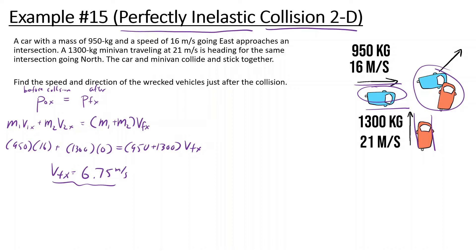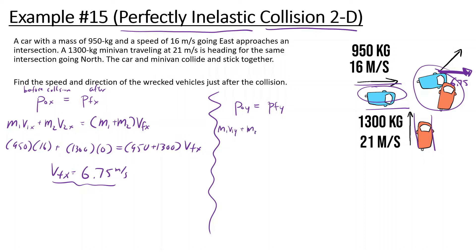So we know in the X direction, when these cars hit each other and stick together, they're both moving at 6.75 meters per second. Now let's think about the Y direction — the momentum before they collide in the Y direction and the final momentum in the Y direction. We do M1·V1y + M2·V2y = (M1 + M2)·Vfinal_y.